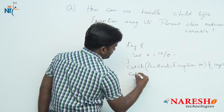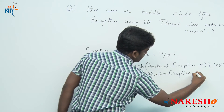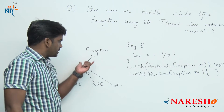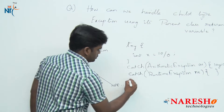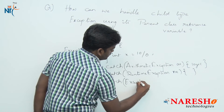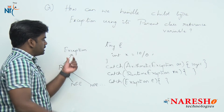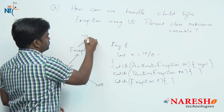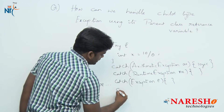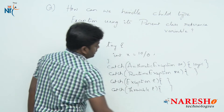We can use RuntimeException to handle it. What is the parent class of RuntimeException? It is Exception, so we can use Exception to handle it as well. And the super class of Exception is Throwable, so we can also give Throwable. That is the hierarchy of exceptions.